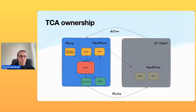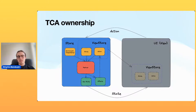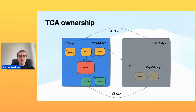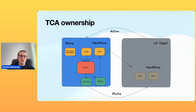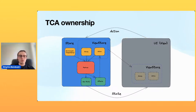The ownership diagram represents how components own each other. The main two components are Store and ViewStore. The Store mainly contains state and action and presents this part to the View. The Reducer contains mutable state and mutable action — it generates new state and new effects, and effects may generate new actions. We may also have a Dependency, which was part of the Store in the previous TCA version, but now it can live fully isolated from the Store.